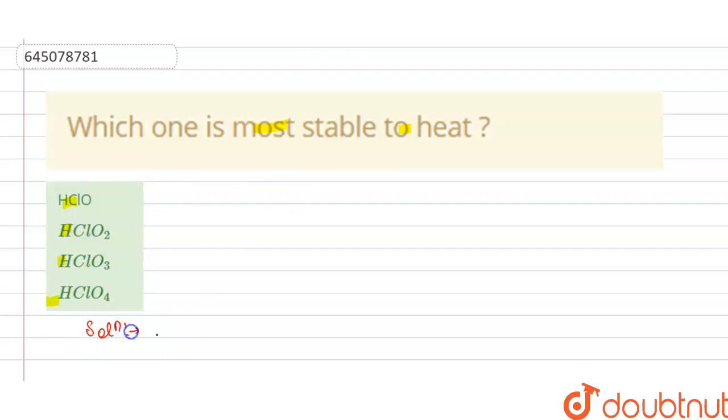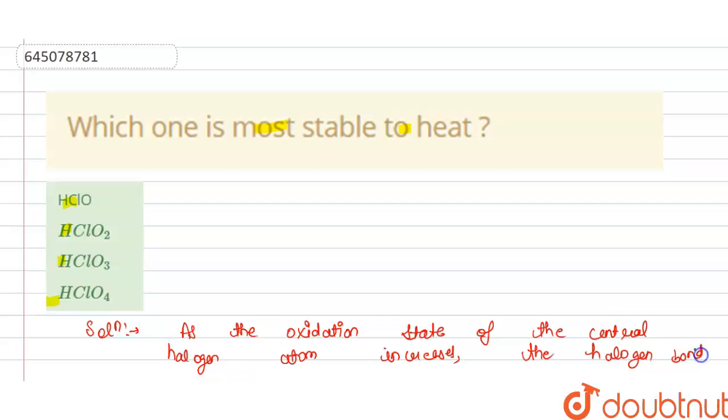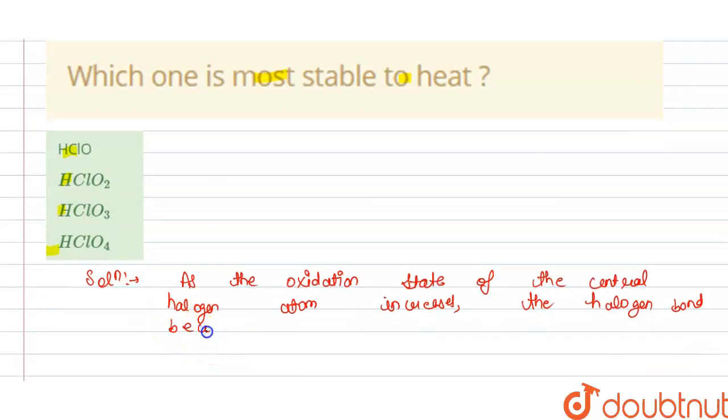So the solution of this question is, we know that as the oxidation state of the central halogen atom increases, the halogen bond becomes more and more covalent.